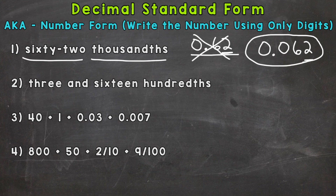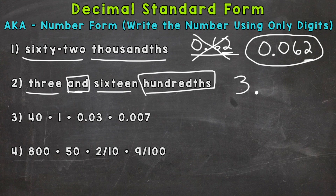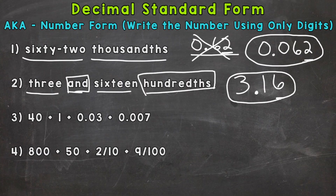For number two, we have three and 16 hundredths. We do have a whole number: three. Remember, and represents our decimal. So: three, decimal, then 16 hundredths. The first name is 16, which we write as is. That 16 needs to end in the hundredths place — and that works. So the answer is correct. Always double check your standard form with the word form to make sure they match: three and 16 hundredths — we're good.